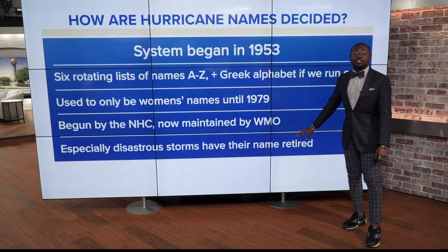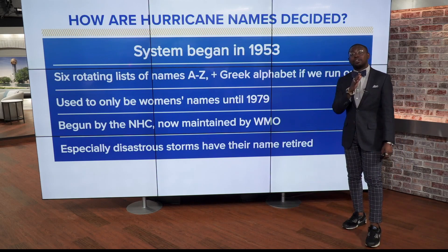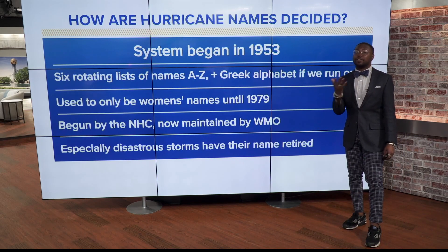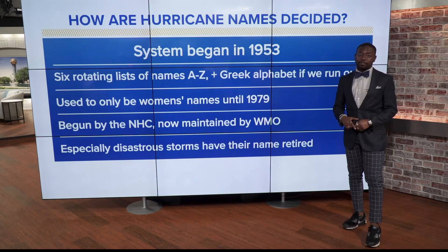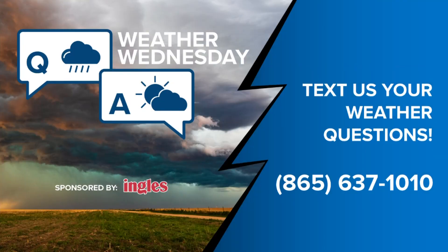Especially disastrous storms have their names retired — for example, Hurricane Katrina. Thanks, Tavian. And if you have a weather question, just let us know. Text us at 865-637-1010 and we will certainly do our best to get you answers every Wednesday right here on WBIR.